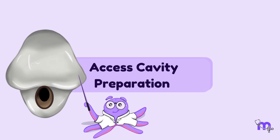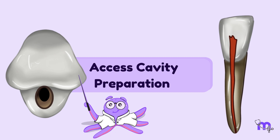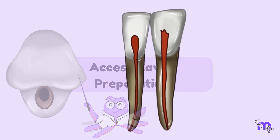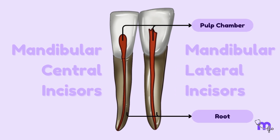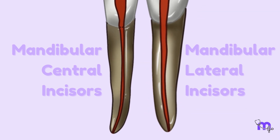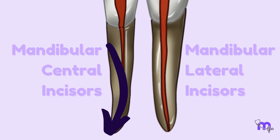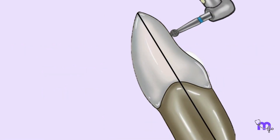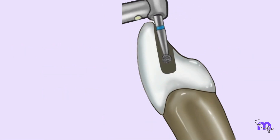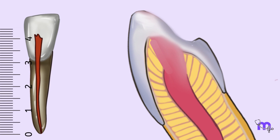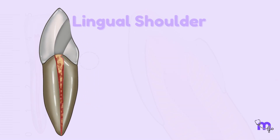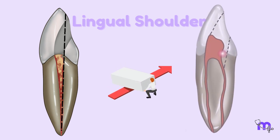Now let's go through how the axis opening of the mandibular lateral incisor varies from the mandibular central incisor. Compared to the central incisor, the pulp chamber and root of the lateral incisor are bigger. However, unlike the straightness of the central's root, the root of the lateral may curve distally or labially. While the axis opening techniques of the mandibular and maxillary incisors are similar, keep in mind that tooth size and lingual shoulder can make a difference. The lingual shoulder could potentially hinder both straight line access and the location of a second canal.